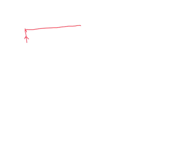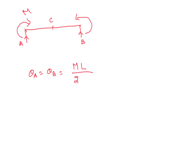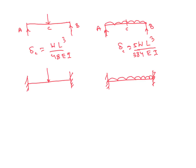Next condition: simply supported beam with moment M. Slope is maximum at A and B. This has also been asked two times in ISRO and is important for other exams. Maximum deflection at midpoint C is Y_C = ML² / 8EI.